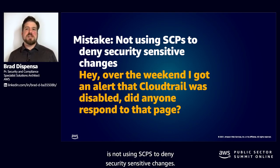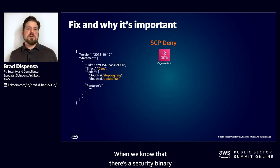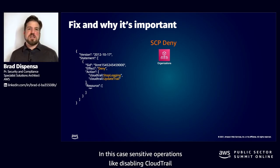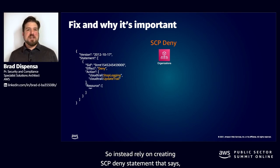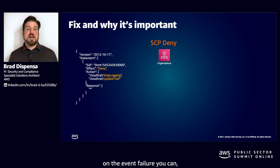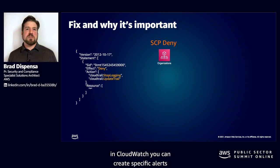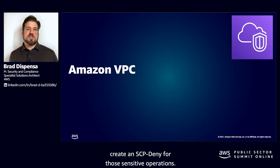The next mistake is not using SCPs to deny security sensitive changes. The scenario is getting a call that CloudTrail was disabled over the weekend — did anyone respond to that page? We don't want that situation. If there's a security action that should never take place, simply enforce it in the service control policy. Sensitive operations like disabling CloudTrail almost never happen for the vast majority of AWS customers, so rely on creating an SCP deny statement rather than good intentions or after-the-fact event alerts. You can still alert on the event failure in CloudWatch, but if you want to make sure something simply isn't possible — even by the root principal — create an SCP deny for those sensitive operations.